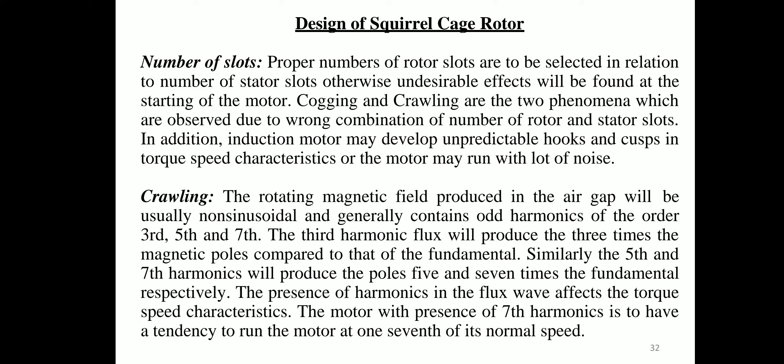The rotating magnetic field produced in the air gap is generally non-sinusoidal and contains odd harmonics of order third, fifth, and seventh. The third harmonic produces three times the magnetic poles of the fundamental; fifth and seventh harmonics produce five and seven times respectively. The presence of seventh harmonics tends to make the motor run at one-seventh of its normal speed.